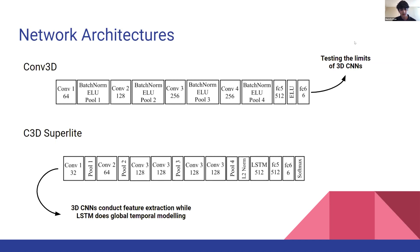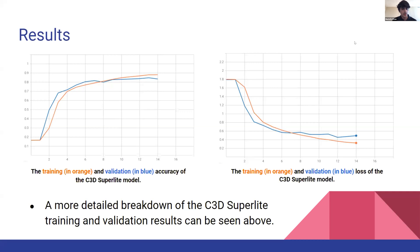C3D Superlight is a model architecture developed by a group at IBM that not only uses 3D CNNs to conduct feature extraction, but also uses an LSTM to do global temporal modeling — incorporating the time-series aspect of hand gestures into actually recognizing what those gestures are.